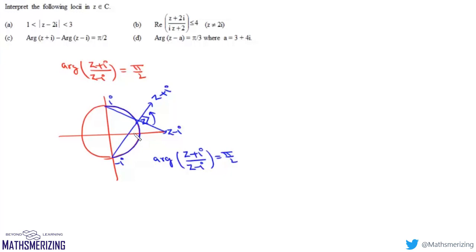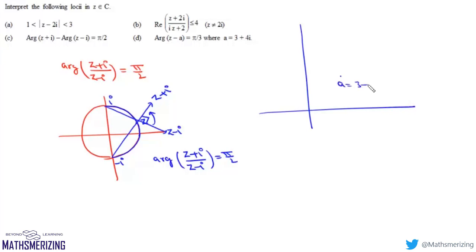Part (d) is arg(z - a) = π/3, where a = 3+4i. We locate the point a = 3+4i, and from this point we draw a ray at angle π/3. The locus of z is this ray starting from point a (not including a itself), stretching to infinity.